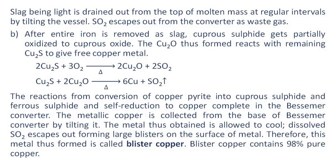Sulfur dioxide escapes out from the converter as waste gas. After entire iron is removed as slag, cuprous sulfide gets partially oxidized to cuprous oxide. The cuprous oxide formed reacts with remaining cuprous sulfide to give free copper metal. The reactions from conversion of copper pyrite into cuprous sulfide and ferrous sulfide, and self-reduction to copper, complete in the Bessemer converter. The metallic copper is collected from the base of the Bessemer converter by tilting it. The metal is allowed to cool, and dissolved sulfur dioxide escapes, forming large blisters on the surface; therefore this metal is called blister copper.